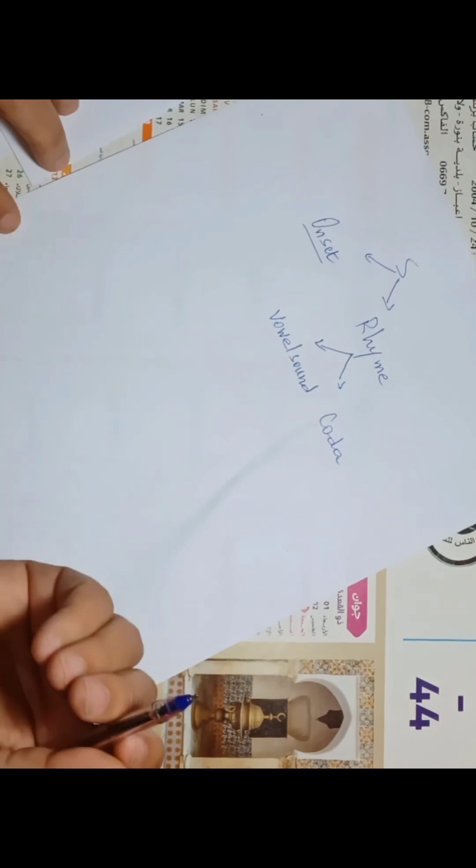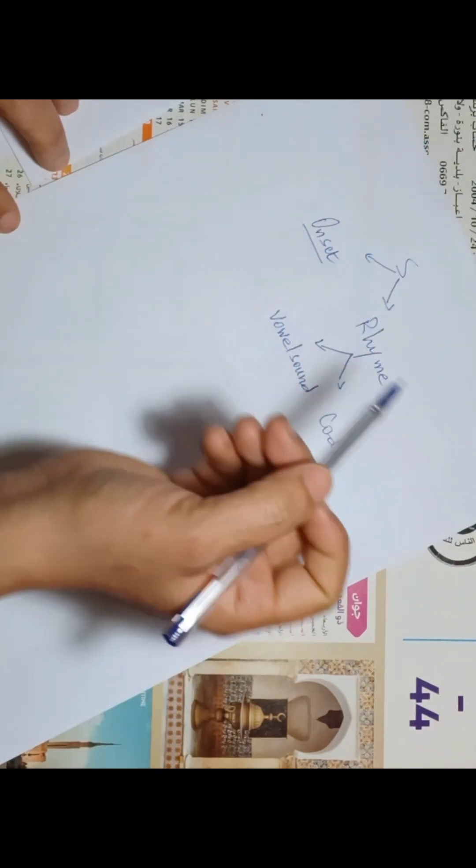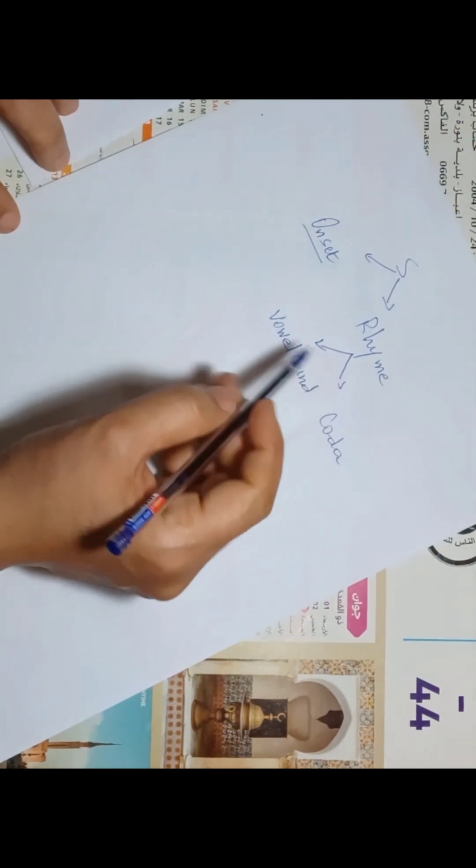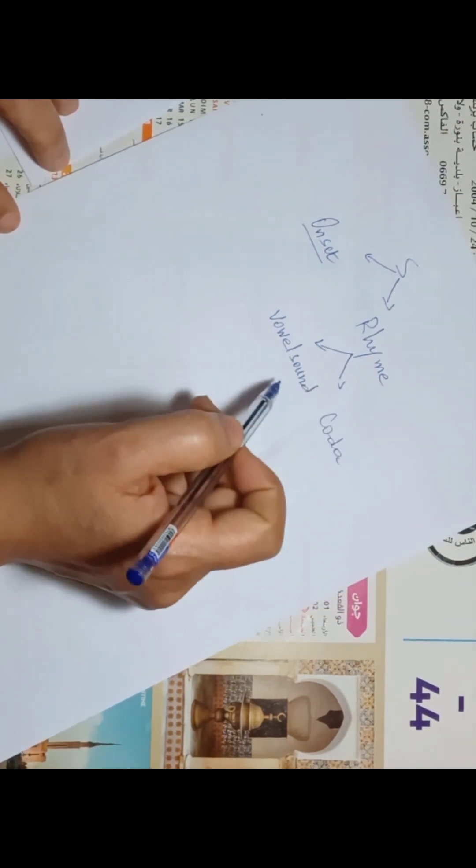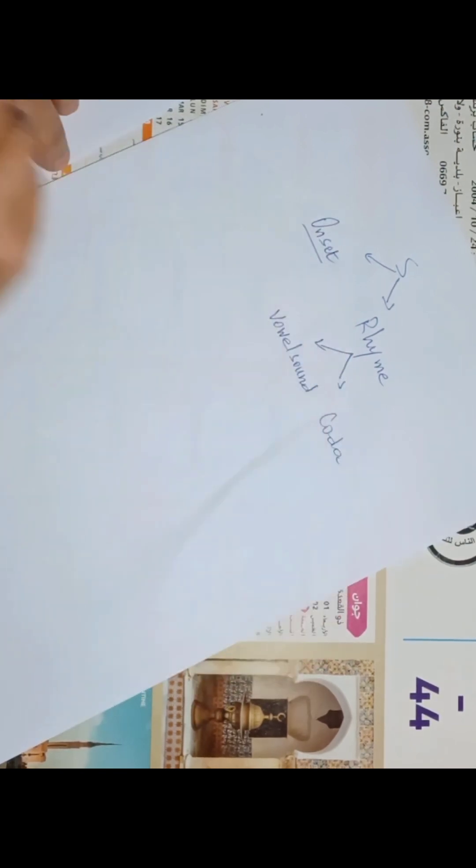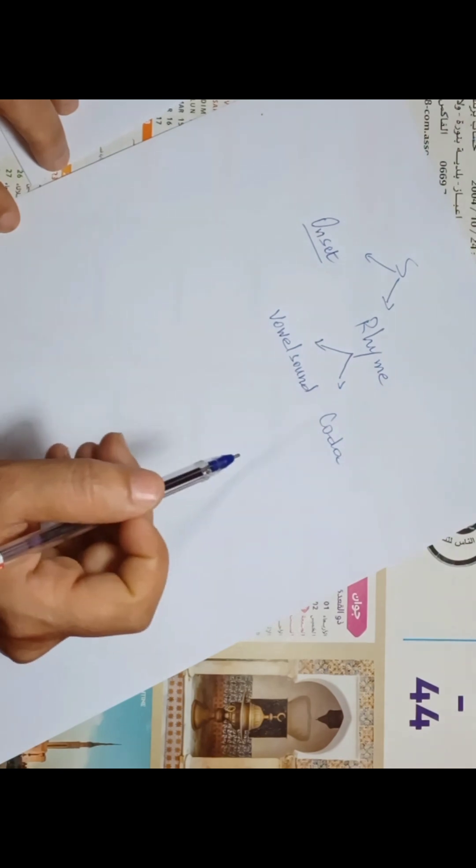As you know, the English syllable is composed of the onset and the rhyme. The rhyme is composed of a vowel sound, sometimes called the center or the peak, and the coda. The onset and the coda are composed of consonant sounds.